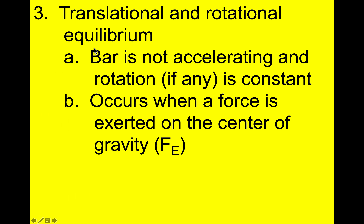Now, translational and rotational equilibrium. The bar is not accelerating in rotation — if any rotation occurs, it is constant — and this occurs when a force is exerted on the center of gravity. Translational equilibrium basically means that if I apply a force, the whole object will be moving — the whole meter stick would move as one. Rotational equilibrium is a little different; this has to do with rotation, in other words if the object is spinning.